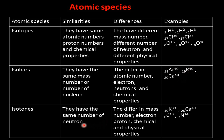Isotones: they have the same number of neutrons but differ in mass number, electron number, proton number, and both chemical and physical properties. Examples: potassium-39 and calcium-40 have the same neutron number (mass minus atomic number gives the same value); calcium and nitrogen also share the same neutron count.